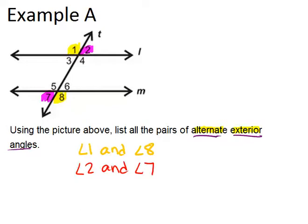Remember, because the lines are not marked as parallel, it means we can't say for sure that those pairs of angles are congruent. We only know that they are alternate exterior angles.